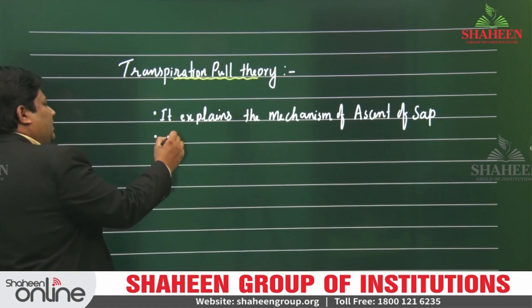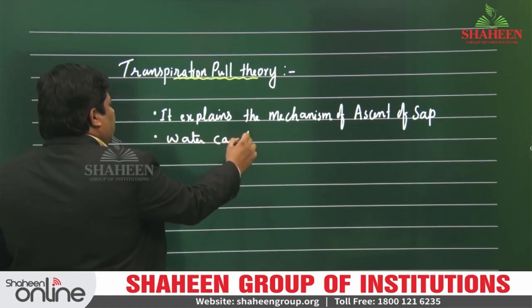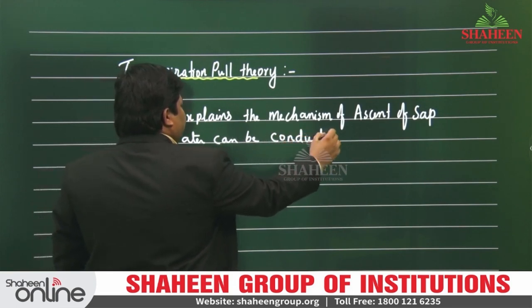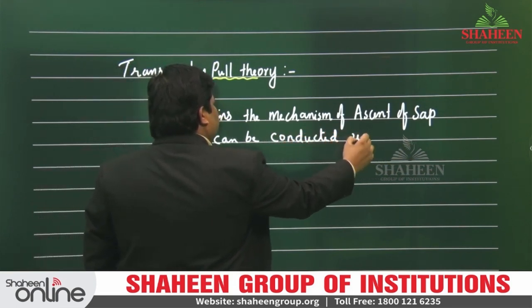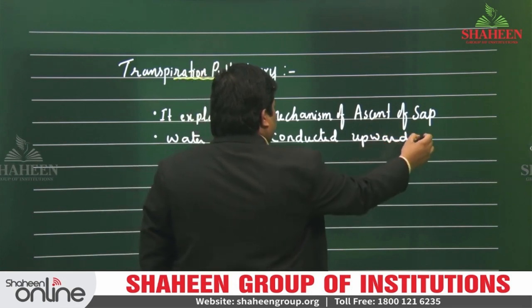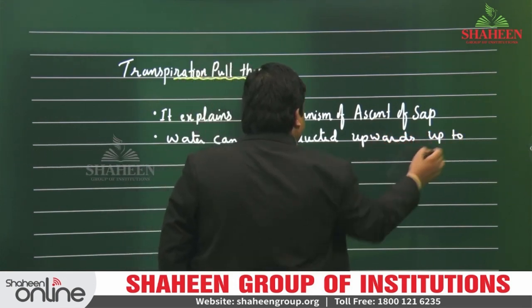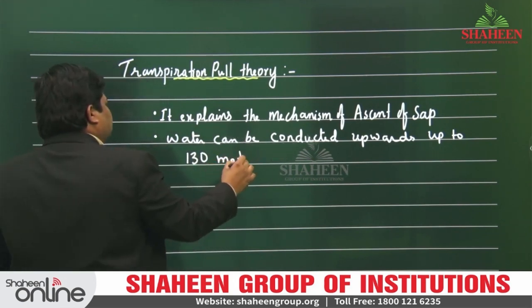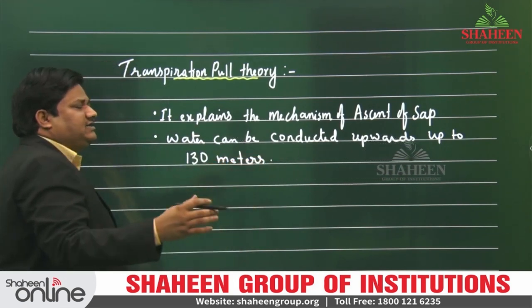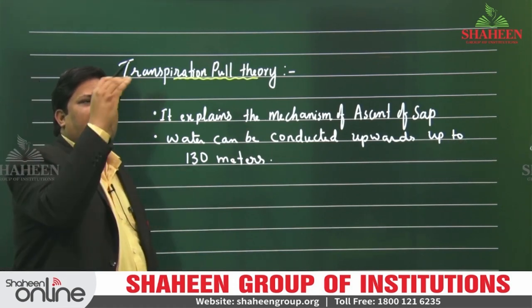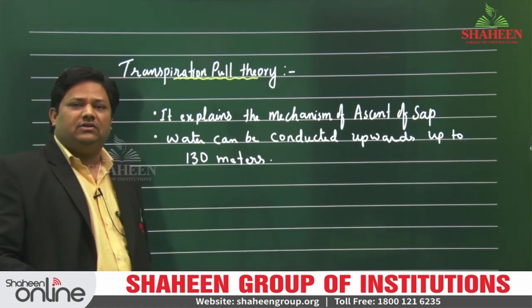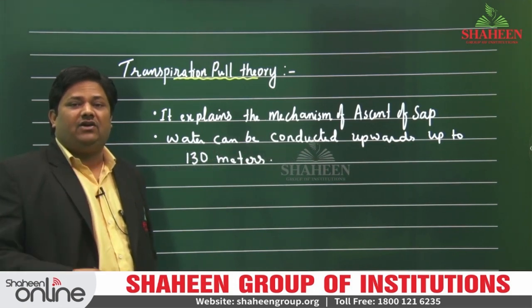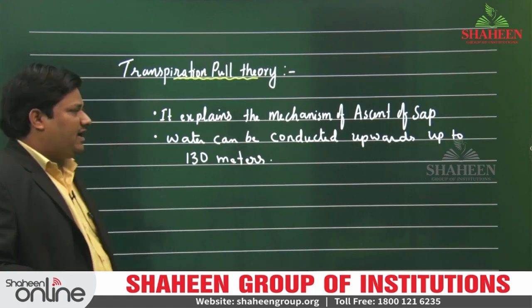Water can be conducted upwards up to 130 meters, against gravity. Up to 130 meters, this is called ascent of sap — ishi ko bolte haam ascent of sap.